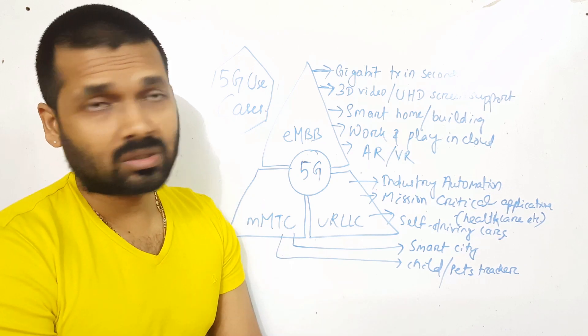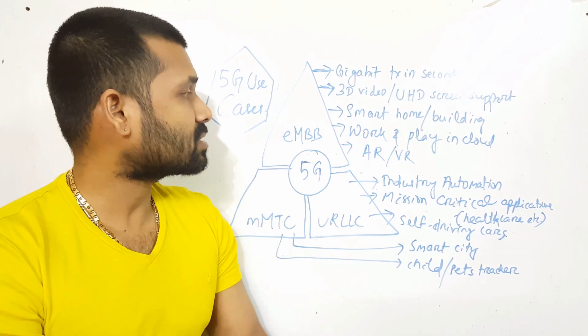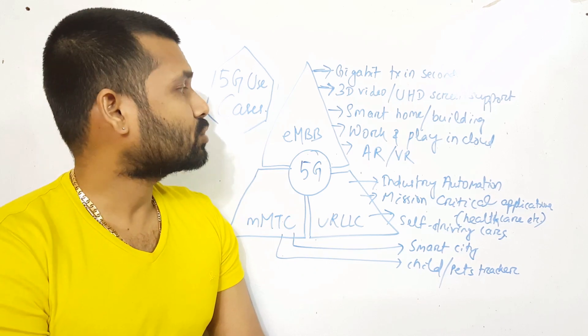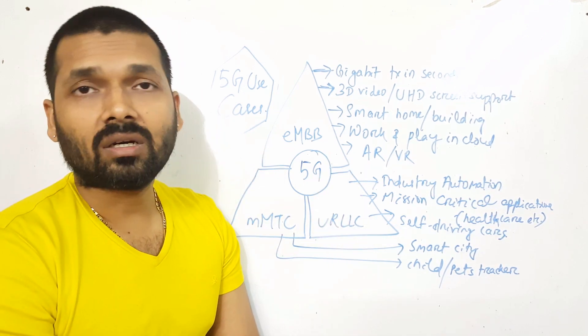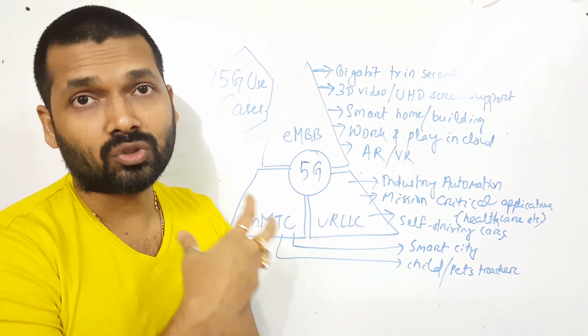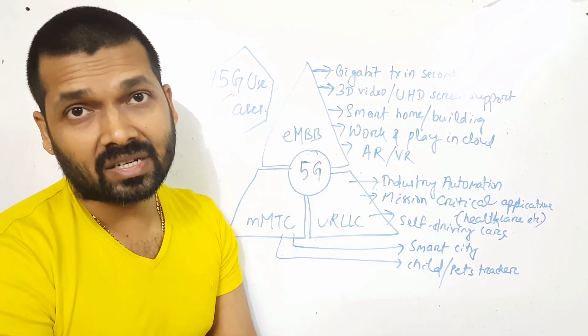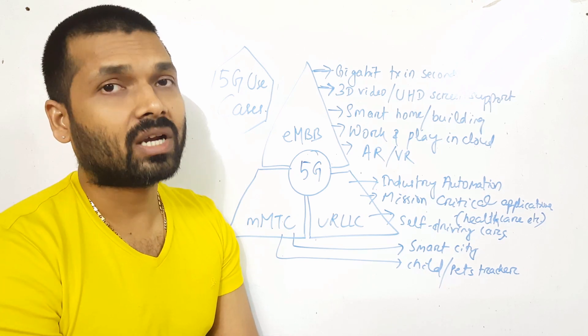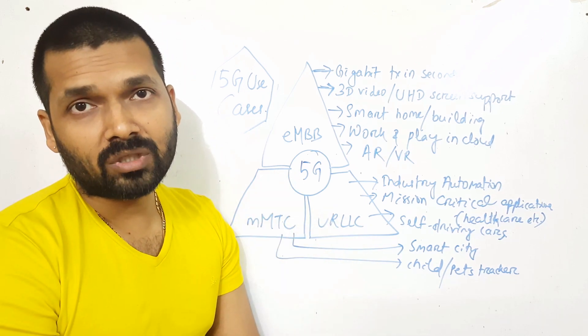We have three main use cases of 5G. Number one is EMBB, or Enhanced Mobile Broadband service. This particular part of 5G will let us explore the highest amount of throughput possible in 5G technology. It can support gigabit transmission in seconds, so we can have the massive or mammoth speed that we require for high-end applications.